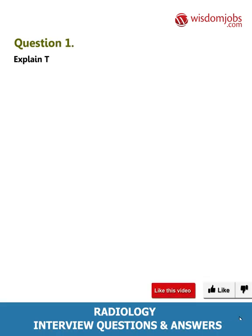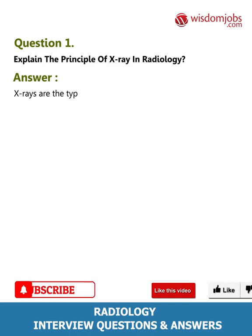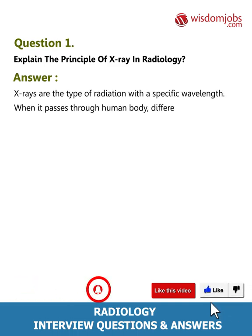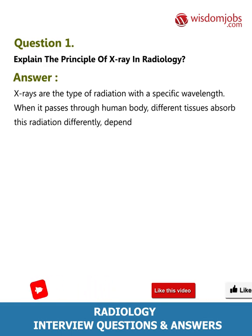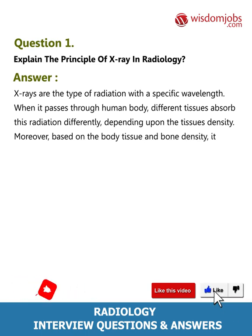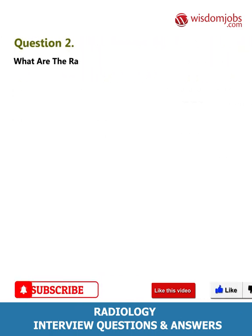Question 1: Explain the principle of x-ray in radiology. Answer: X-rays are a type of radiation with a specific wavelength. When they pass through the human body, different tissues absorb this radiation differently depending upon the tissue's density. Based on the body tissue and bone density, it creates an image on the film.